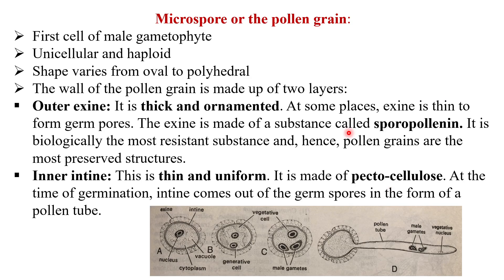The microspore or pollen grain is the first cell of the male gametophyte. It is unicellular and haploid. Shape varies from oval to polyhedral. The wall of the pollen grain is made up of two layers: the outer exine layer, which is thick and ornamented. At some places the exine is thin, forming a germ pore.